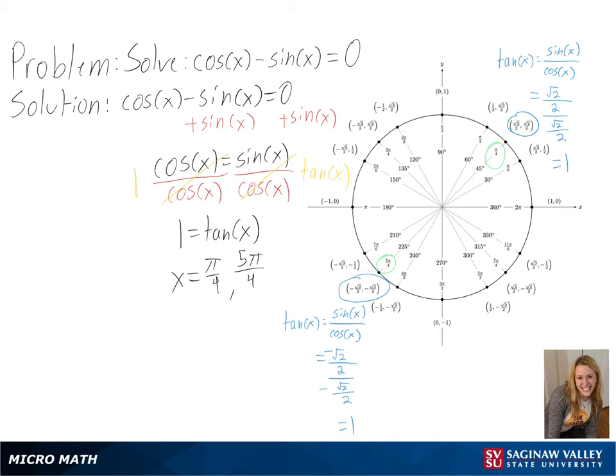Although, we could also continue to add and subtract 2 pi to both of our values and also get 1. So we can simplify this by just adding 2 pi n to all of our values. We can also further simplify this to get pi over 4 plus pi n, since adding pi will give us our 5 pi over 4. And with that, we have solved our trig equation.